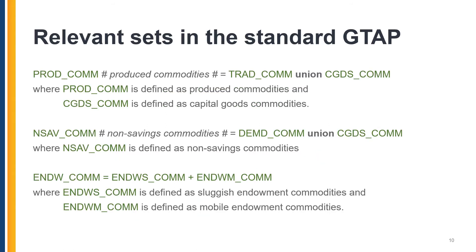Here are some examples that show how the subsets are related to sets as syntax in the TABLO file, which you will probably encounter at some point later. The union and plus signs are equivalent. You can say the produced commodity equals traded commodity union capital commodity, or you can say endowment commodity equals sluggish commodity plus mobile endowment.